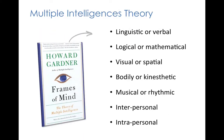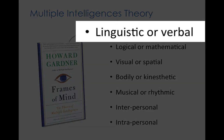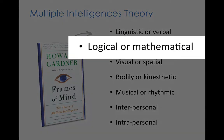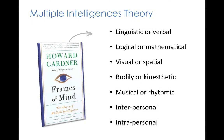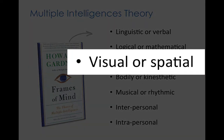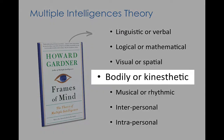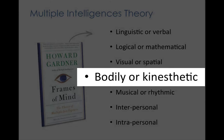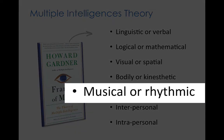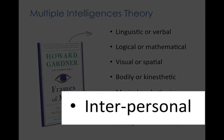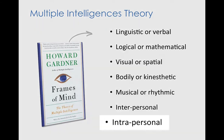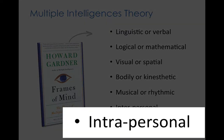Gardner proposed seven basic intelligences: linguistic or verbal intelligence, which is the ability to master spoken and written word and languages; logical or mathematical intelligence, which is the ability to analyze problems logically and mathematically; visual or spatial intelligence, the kind of intelligence pilots or architects have; bodily or kinesthetic intelligence, the kind of intelligence dancers or surgeons have; musical or rhythmic intelligence, the ability to deeply appreciate or compose music; interpersonal intelligence, the ability to understand and relate to other people; and intrapersonal or emotional intelligence, a deep understanding of one's own self.